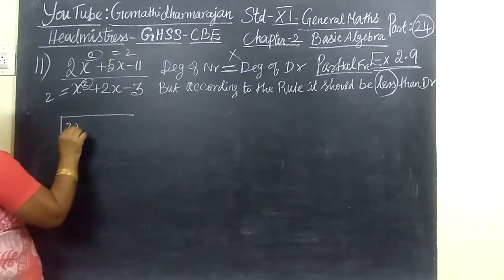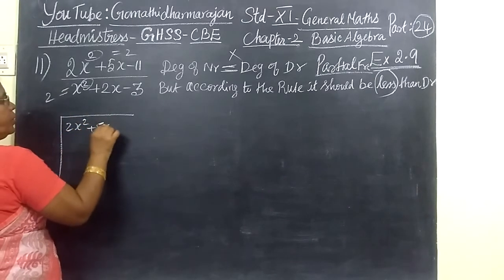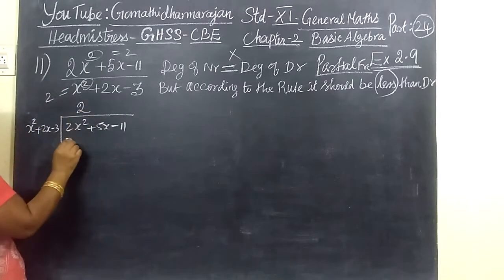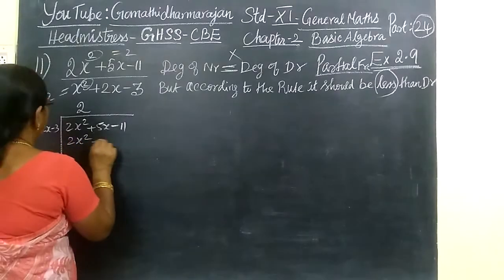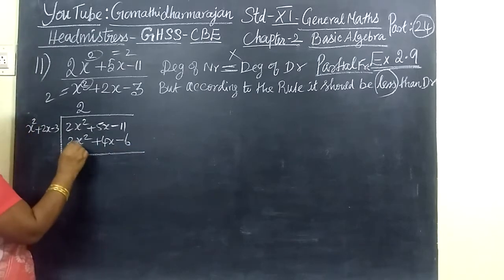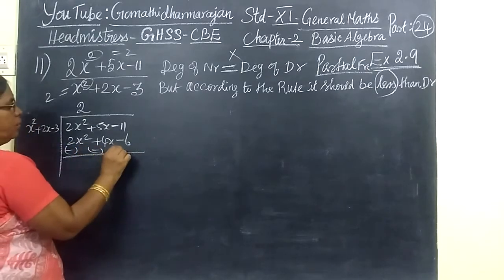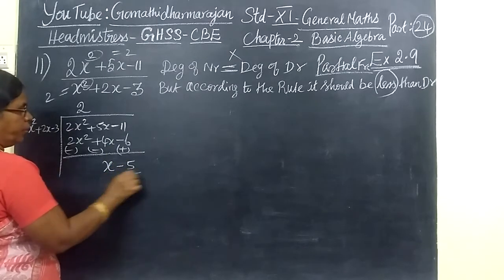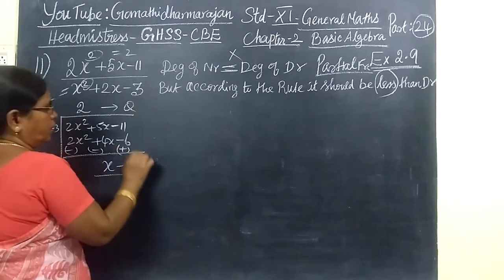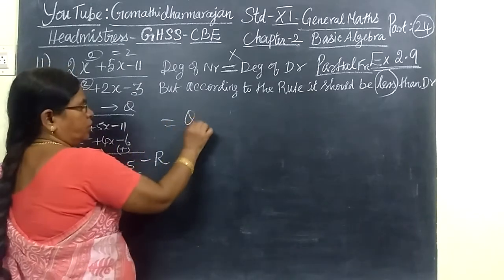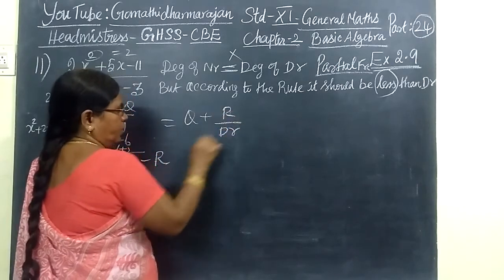So we divide 2X² plus 5X minus 11 by X² plus 2X minus 3. Here 2 times, so 2X² plus 4X minus 6 is here. Change the sign. So 5X minus 4X is X, then minus 5. This is quotient, remainder, divisor. So what will we write? Quotient, then remainder by divisor.